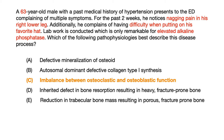The first thing you'll note is that we're talking about an elderly male — a 63-year-old male. Key symptoms included nagging pain in the right lower leg and difficulty when putting on his favorite hat, and that's going to be the key buzzword here. Lab work showed elevated ALK-PHOS.